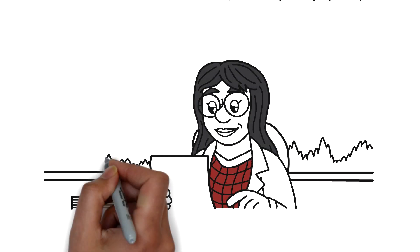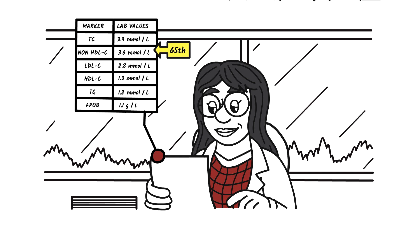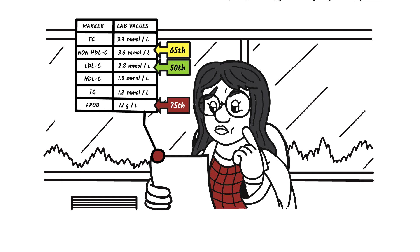Now let's take another example where non-HDL-C is at the 65th percentile and LDL-C is at the 50th percentile. On that basis alone, you might conclude that your patient does not present a high risk of cardiovascular disease. But when you measure ApoB, you find that it's at the 75th percentile. Which number do you trust?